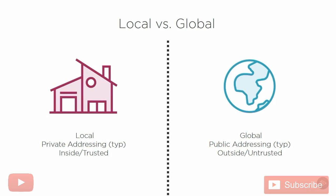In order to understand how NAT operates, we need to understand the difference between local and global areas of our network. When we talked about how the firewall operates, we talked about the inside trusted area and the outside untrusted area. Typically with NAT, the local network is affiliated with the inside trusted network and the global network is affiliated with the outside untrusted network — though this is not always true.